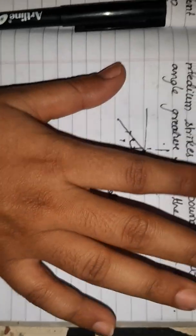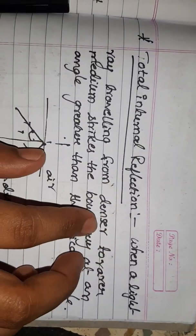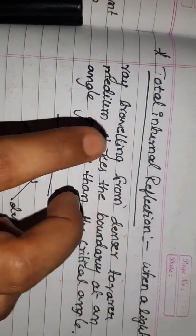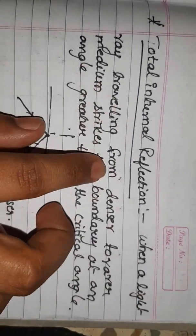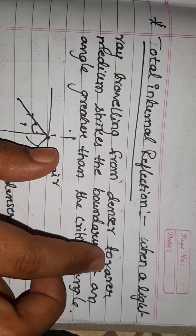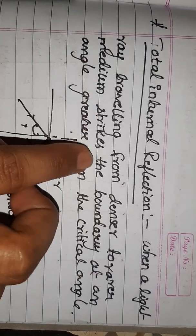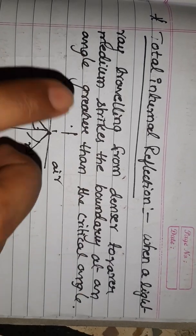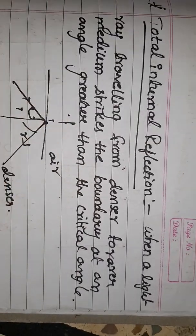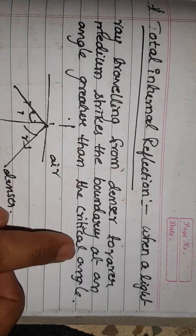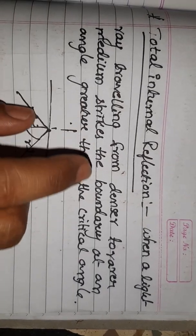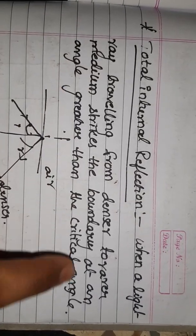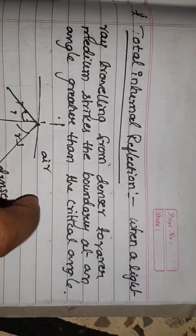Next, Total Internal Reflection. Total Internal Reflection is when a light ray traveling from a denser medium to a rarer medium strikes the boundary at an angle greater than the critical angle.